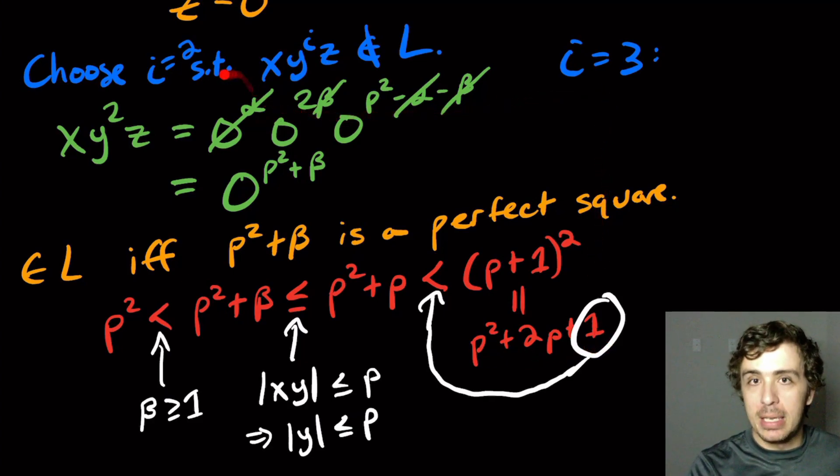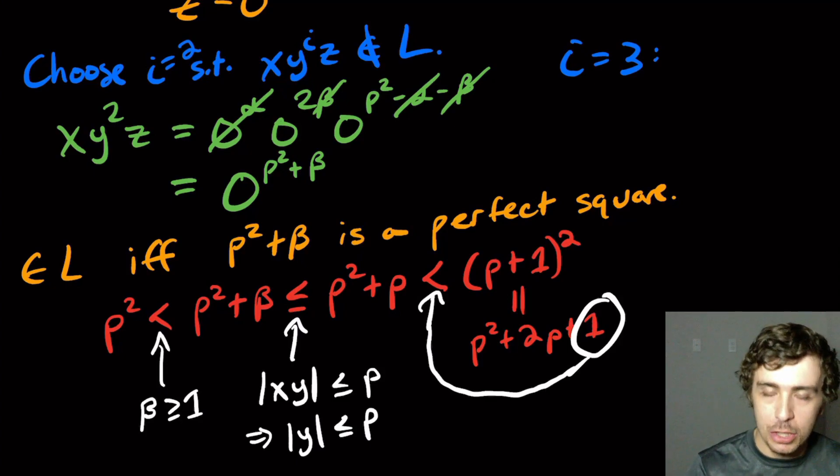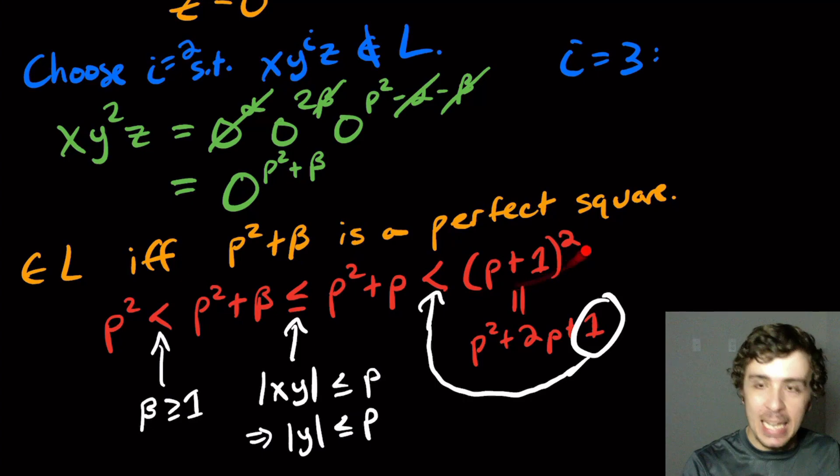So the i equal two and the i equal three also work. I think maybe the i equal zero one also works, but I haven't checked. But higher ones, it's a lot harder to make sure that it's not actually a perfect square. Because it could potentially be equal to this one if it goes any higher than p squared plus two p.